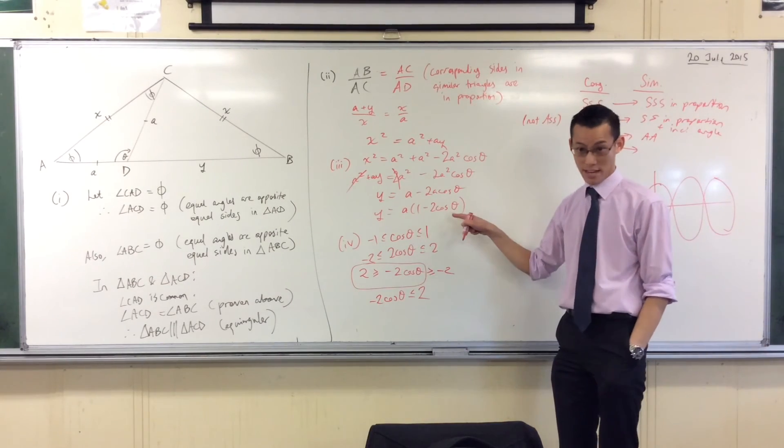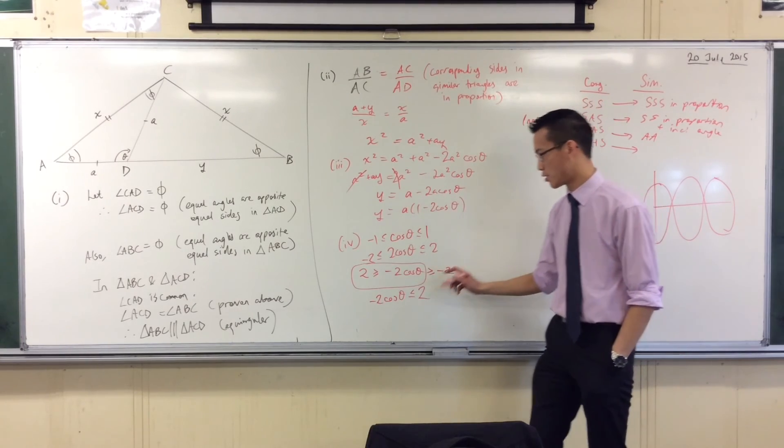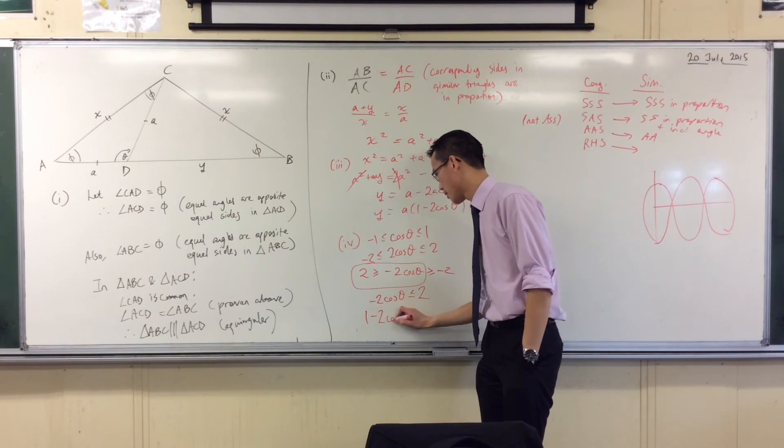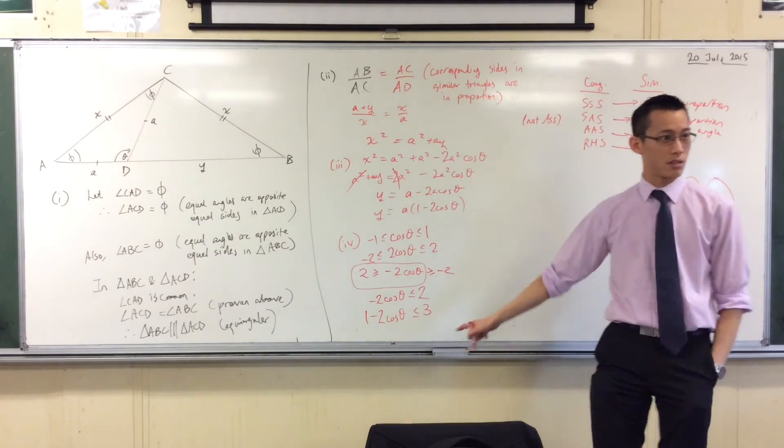Now, I don't just have minus 2 cos theta. I have 1 minus 2 cos theta. So I need to add 1 to both sides to get that. Oh, look. There's a 3. You see that? Okay.